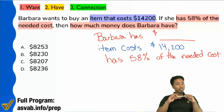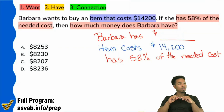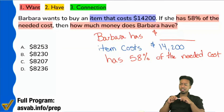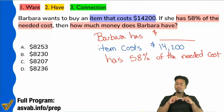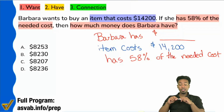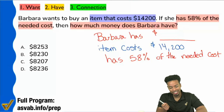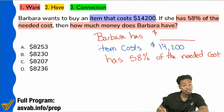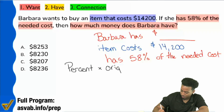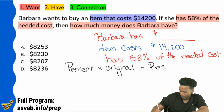Can anybody write the formula down in the chat box? What's the formula when dealing with percents? Percent times the original equals the result. Exactly — let's write that down: percent times the original equals the result.